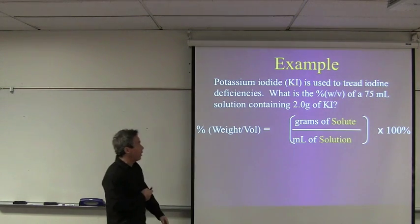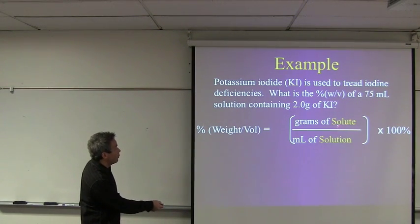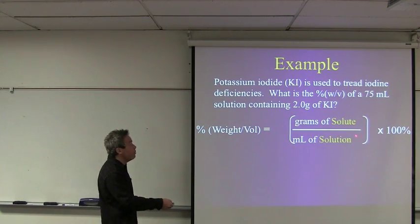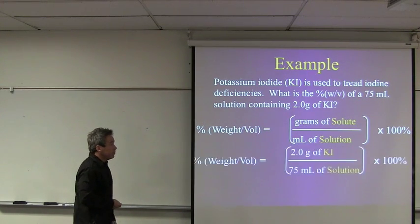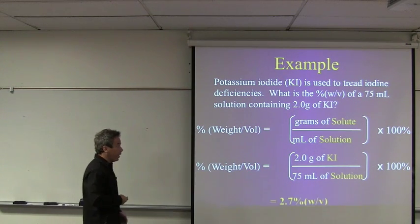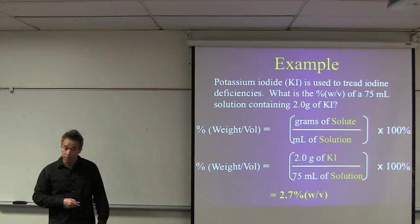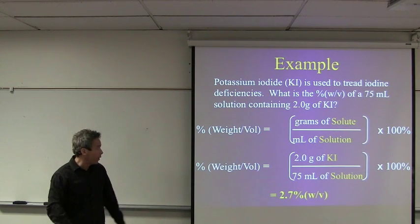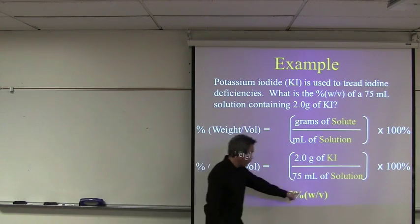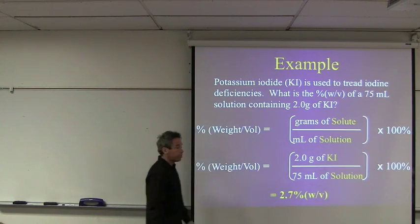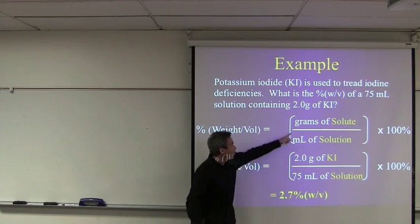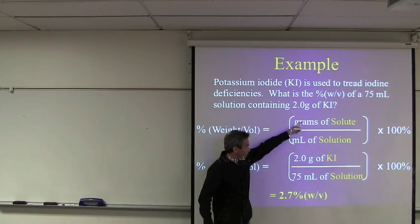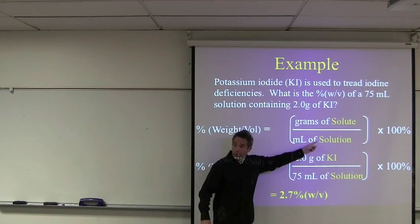So, the point is, when someone says percent, there's three different ones. You better know which one they're talking about. Percent weight to volume in this question we're asked for. I get the definition of percent weight to volume, and now I'm given, to get this, I need the grams of solute. I'm given it. 2.0 grams of potassium iodide. I need the volume of solution in milliliters. So I put those numbers in there, and then I use my calculator to calculate the percent weight to volume.